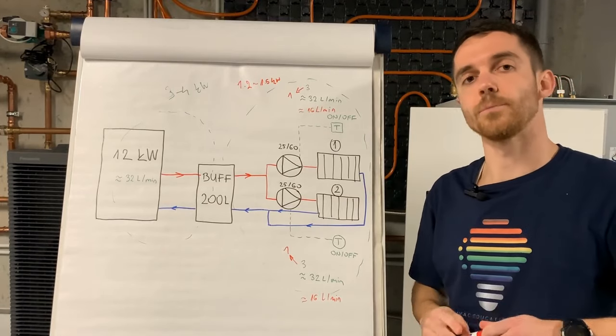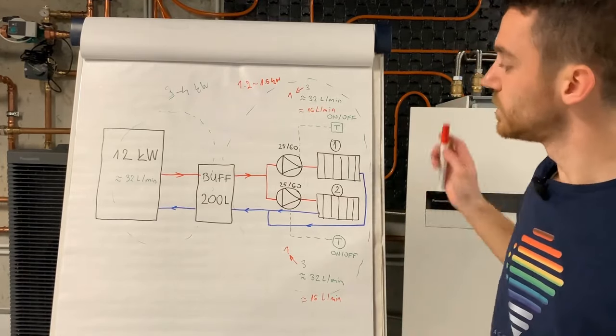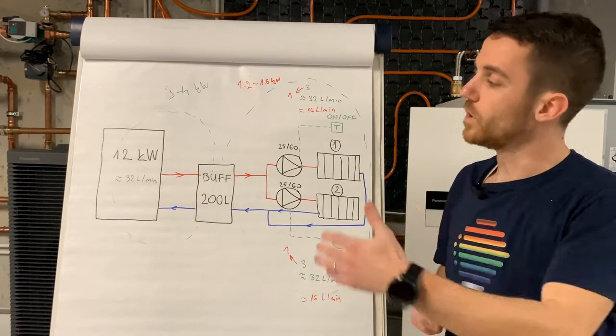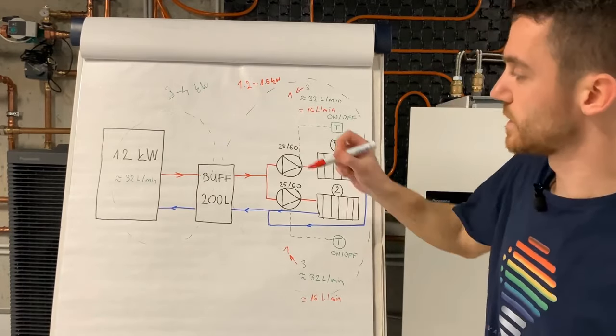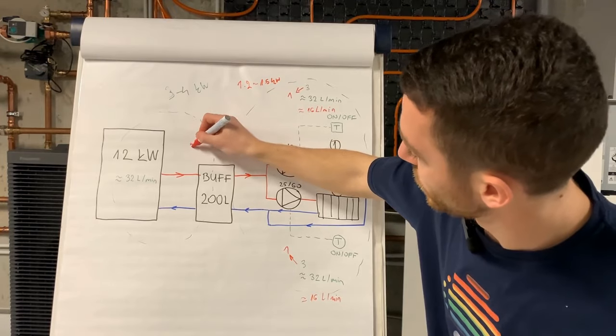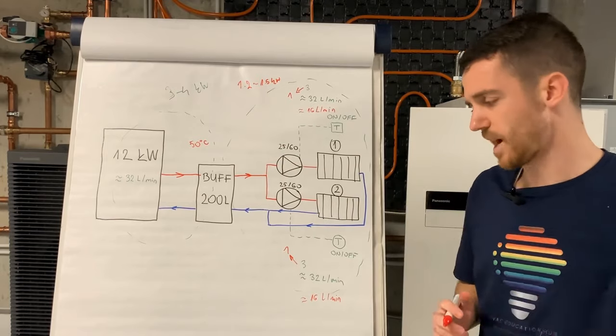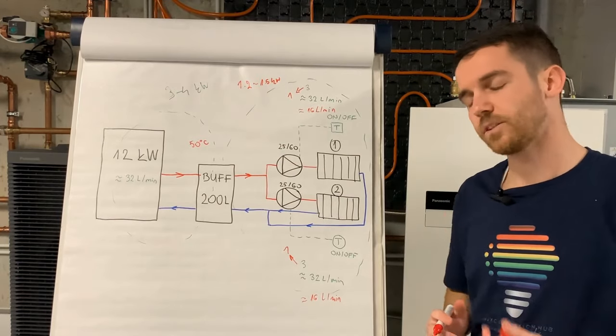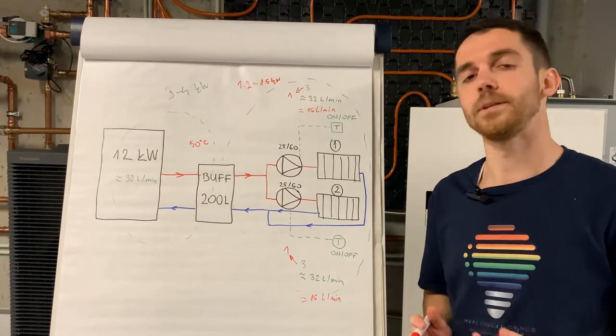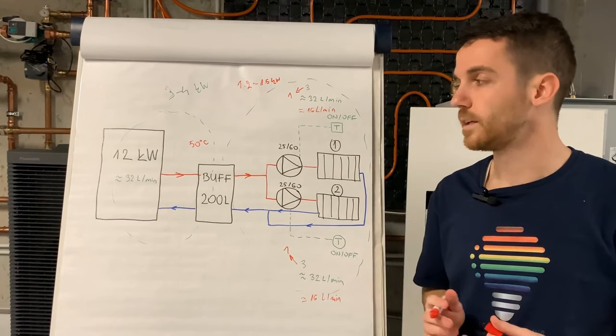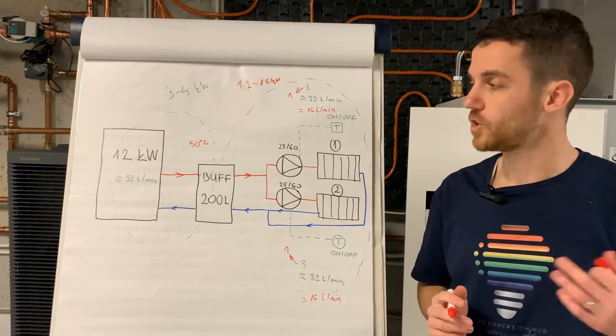Of course, total consumption in kilowatt hours depends on the house itself, because we have constant flow temperature around 50 degrees, so really high consumption because house is with radiators. But for sure, with compensation curve, with modulating this temperature, we can achieve more.